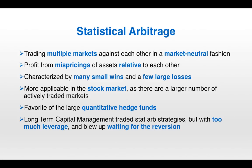Next up is statistical arbitrage. These strategies trade multiple markets against each other in a market-neutral fashion, hedging out exposure to a sector or even to the specific market being traded. The idea is to profit from mispricings of assets relative to each other, rather than predicting the movement of just one asset. Characterized by many small wins and a handful of large losses, these strategies are more applicable in the stock market because there are far more actively traded stocks — up to 5,000 — than the roughly 50 actively traded futures. Statarb is a favorite of large quantitative hedge funds; long-term capital management was one such fund that traded statarb strategies.